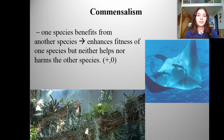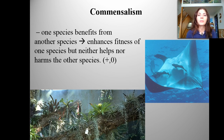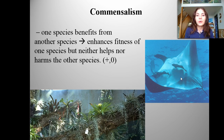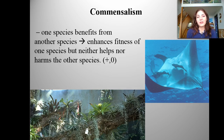Commensalism is when one species benefits while the other is neither harmed nor helped. So if we put it in numbers, one is going to get a plus, and the other is going to get a zero — one benefits by gaining or increasing its fitness, and the other is not being harmed but it's not being helped either. An example would be small sharks riding with a manta ray — they're not expending as much energy, and the manta ray is not really being helped or hurt.